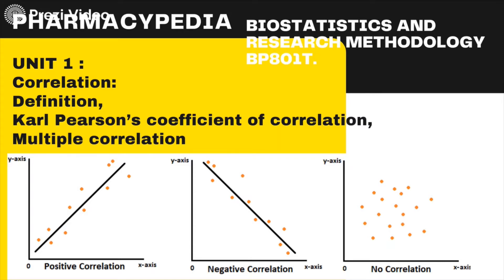The relation between two variables is defined by the correlation technique, whereby we identify if we make one change in a variable, how it is going to impact the other one.